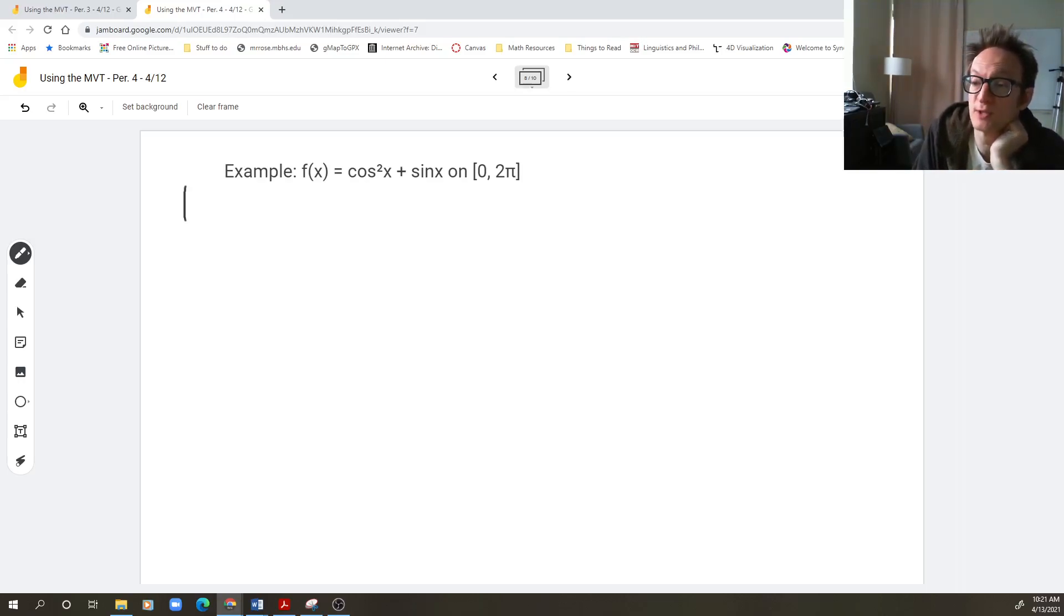So we are going to take the derivative. The mean value theorem enabled me to prove these very useful facts about the relationship between the derivative of a function and that function. So I take the derivative, of course. Perhaps it's even better to rewrite this function one more time as what it really is, which is cosine x quantity squared plus sine x. That makes it obvious that I have to use the chain rule.